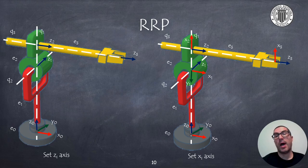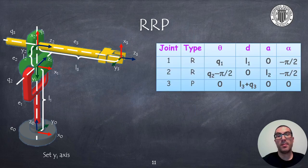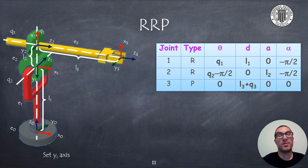The X2 axis will point up or down because the common normal of Z1 and Z2 is the vertical line coinciding with joint 1. X2 in this case is pointing upwards, but pointing downwards is also an option. I have also decided that X3 points in the same direction as X2. In the table of Denavit-Hartenberg parameters, we can observe how theta and alpha values are different from 0 as a consequence of the rotations about the X and Z axes. If we had selected opposite directions for the Z or X axes, then we would probably have some different values for those parameters, but in the end the result would be the same.